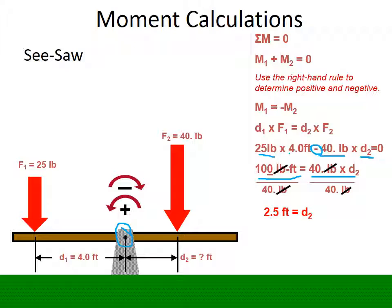And we could use the same example to figure out, if we knew D2, and we wanted to figure out what the force is. So, in other words, if we didn't know F2 is 40, but we did know D2, we could do that as well. It's the same process.